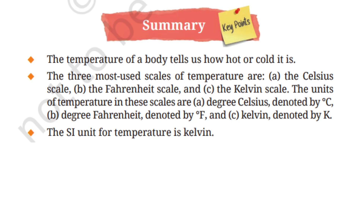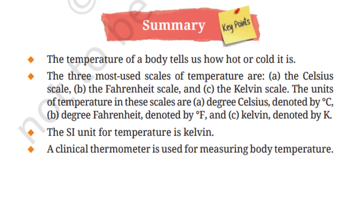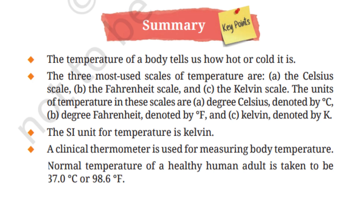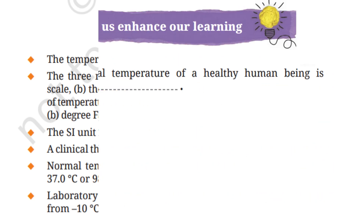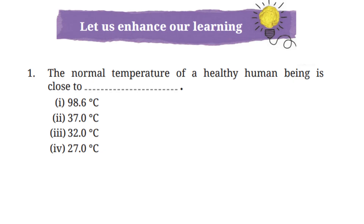Remember this: the SI unit for temperature is Kelvin. A clinical thermometer is used for measuring body temperature, and the normal temperature of a healthy human adult is taken to be 37°C or 98.6°F. Laboratory thermometers typically have a temperature range from −10°C to 110°C. Now let us enhance our learning.